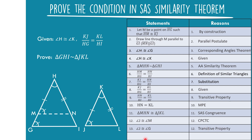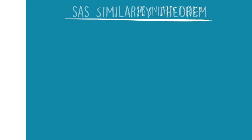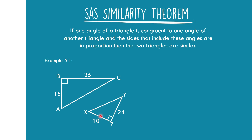For our last statement, we conclude that triangle GHI is similar to triangle JKL by AA Similarity. Now let's look at some examples for SAS Similarity.